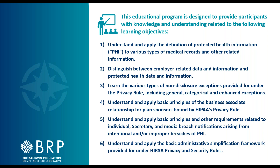We've got six different learning objectives for the program today. These are important because this first piece of HIPAA, the privacy rule, covers a really wide spectrum of concepts and requirements. Number one: understand and apply the definition of protected health information, or PHI, to various types of medical records and other related information. Note that we're only talking about PHI here — the other term you've probably seen is ePHI, electronic PHI, which is relegated to the security rules under HIPAA, covered in our next presentation.